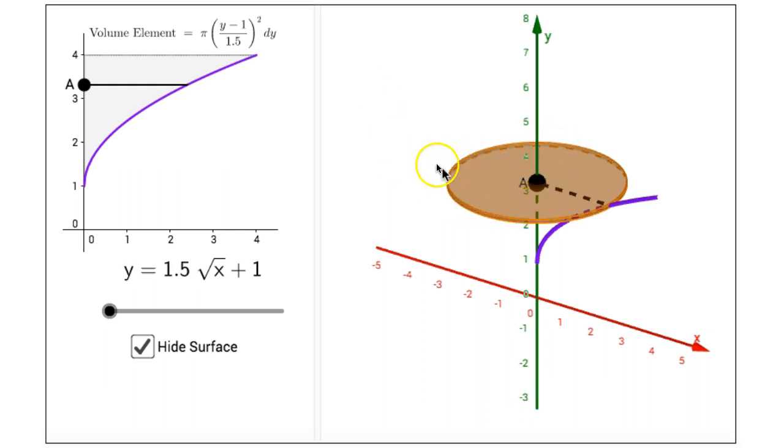So the area of the base or the top is the quantity y minus 1 divided by 1.5 squared times pi. Multiply that by dy, that gives us our volume element, which is displayed in the upper left corner of the interactive figure.